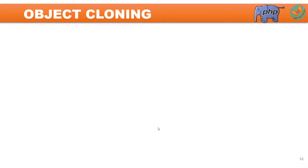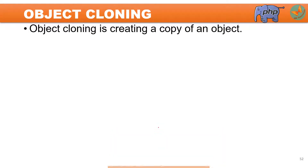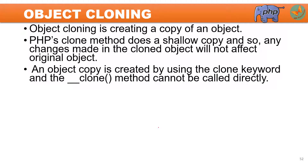Welcome to this tutorial on object cloning. Object cloning is nothing but creating a copy of an object. PHP provides different ways to copy a particular object. When you use the clone keyword, PHP performs a shallow copy, meaning changes in the cloned object will not affect the original object. But if you want to do deep cloning, you have to implement the PHP magic function __clone method, which you cannot directly call — you have to use it with the clone keyword.